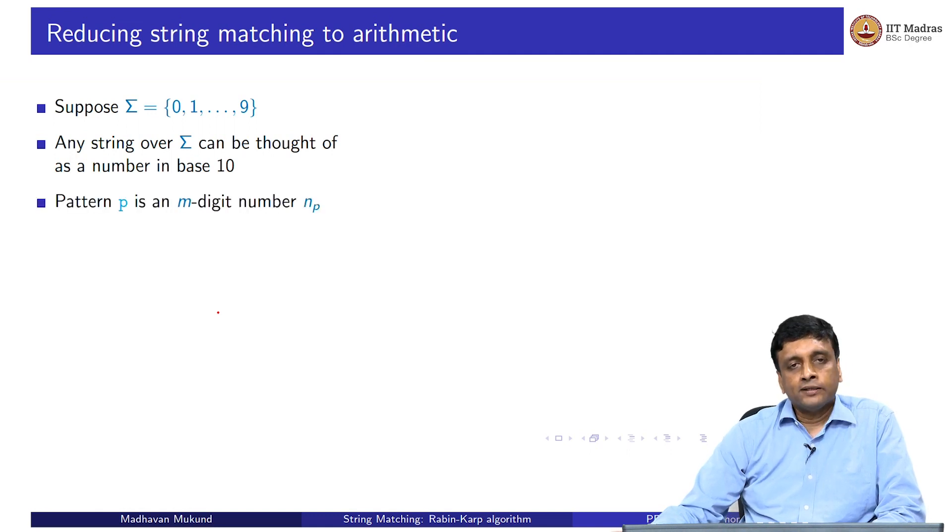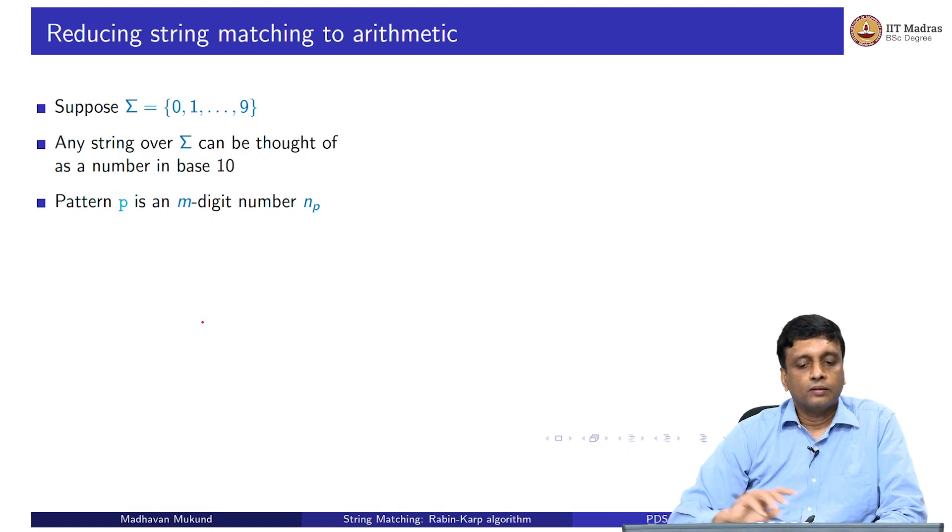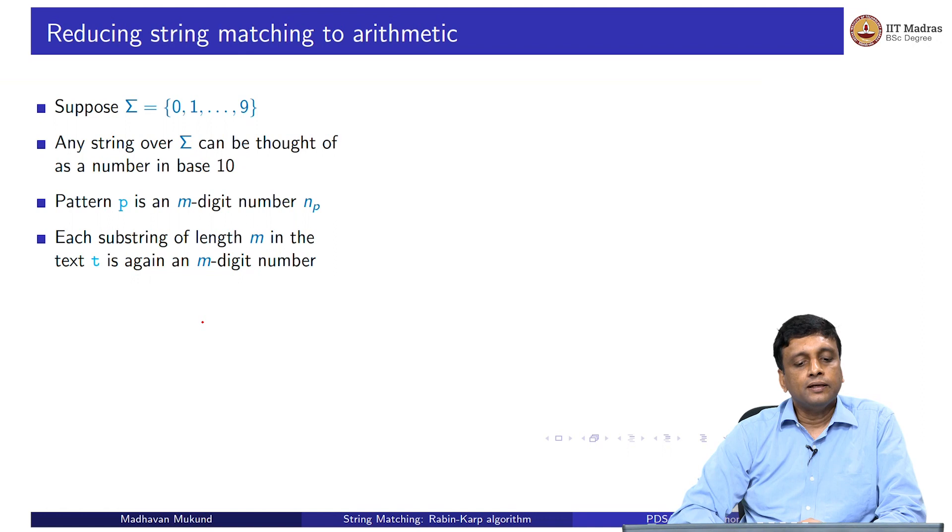If I now take a pattern which has m characters in it, it is equivalent to an m-digit number in our usual decimal notation. It is an m-digit integer. Let us call this the number corresponding to p, n sub p. Similarly, if I take every string corresponding to a slice in my pattern which is of length m, it will again be an m-digit number. Any m-digit sequence of symbols over this alphabet 0 to 9 can be thought of as an m-digit number.